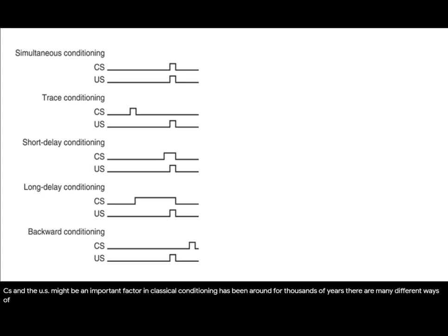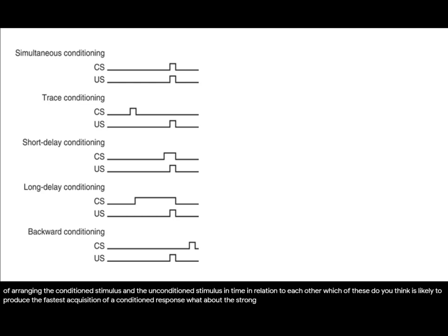There are many different ways of arranging the conditioned stimulus and unconditioned stimulus in time in relation to each other. Which of these do you think is likely to produce the fastest acquisition of a conditioned response? What about the strongest or largest? How about the weakest?